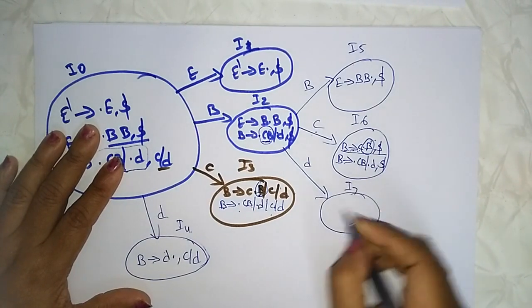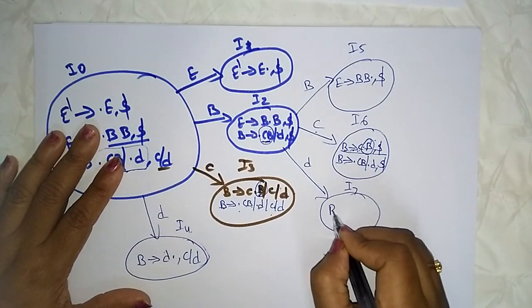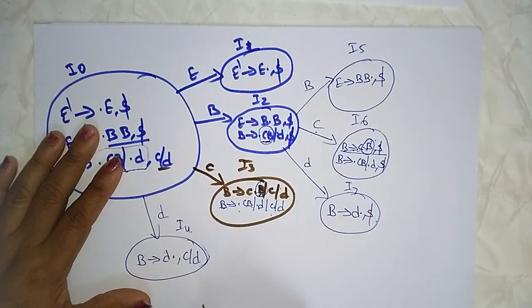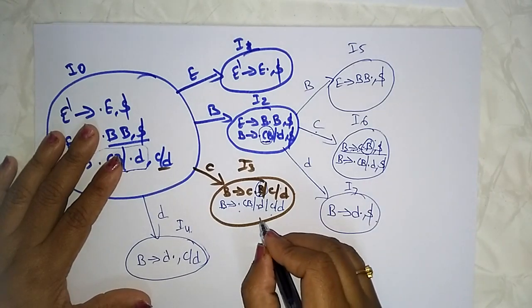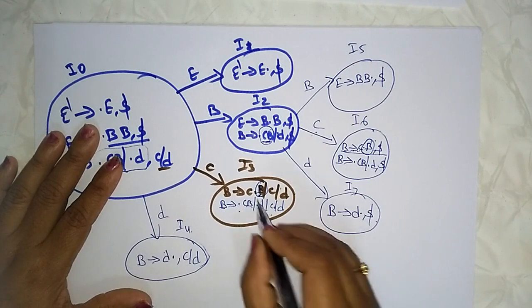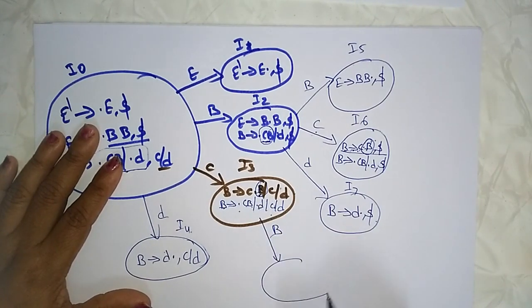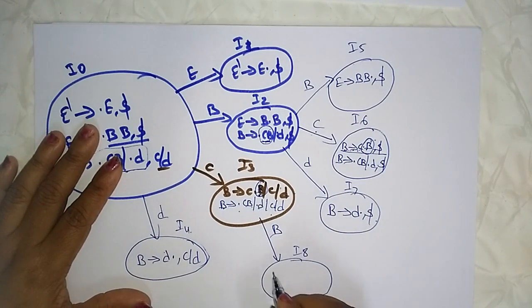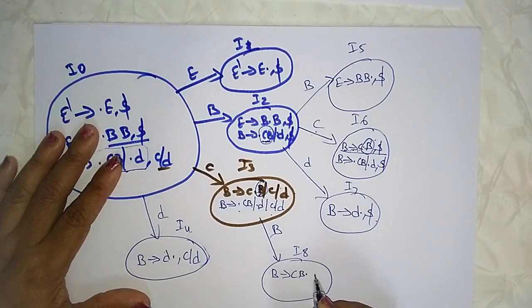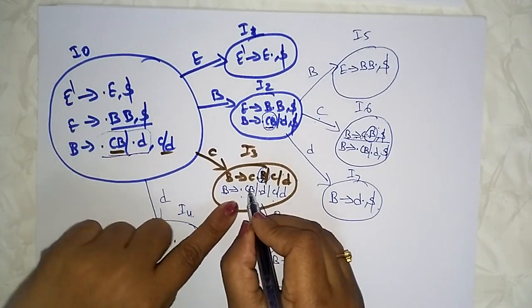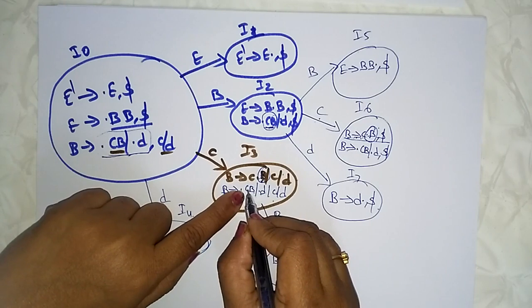I7: B → D · with dollar lookahead. Now on 'b': I8 — B → CB · with c/d lookahead.